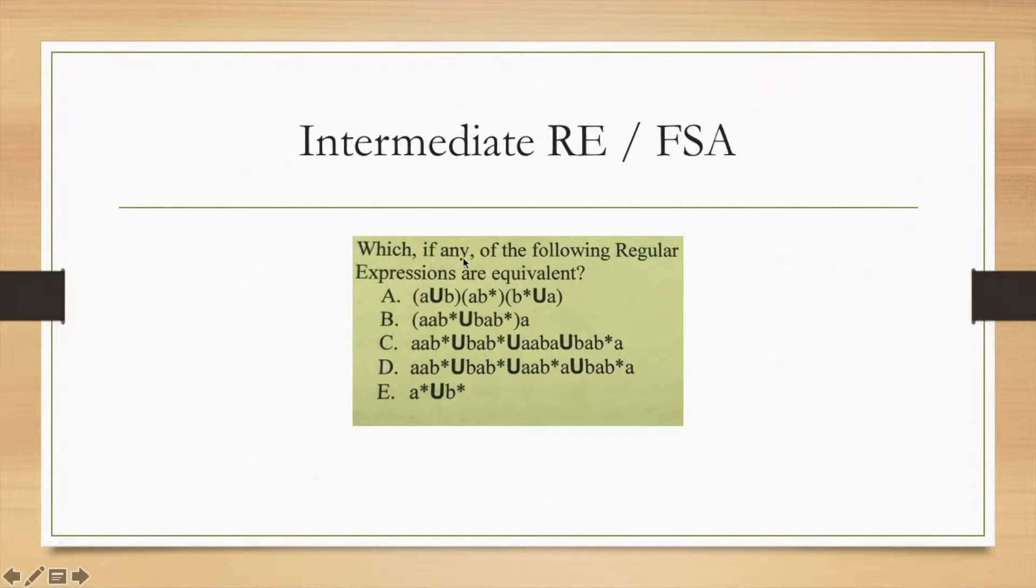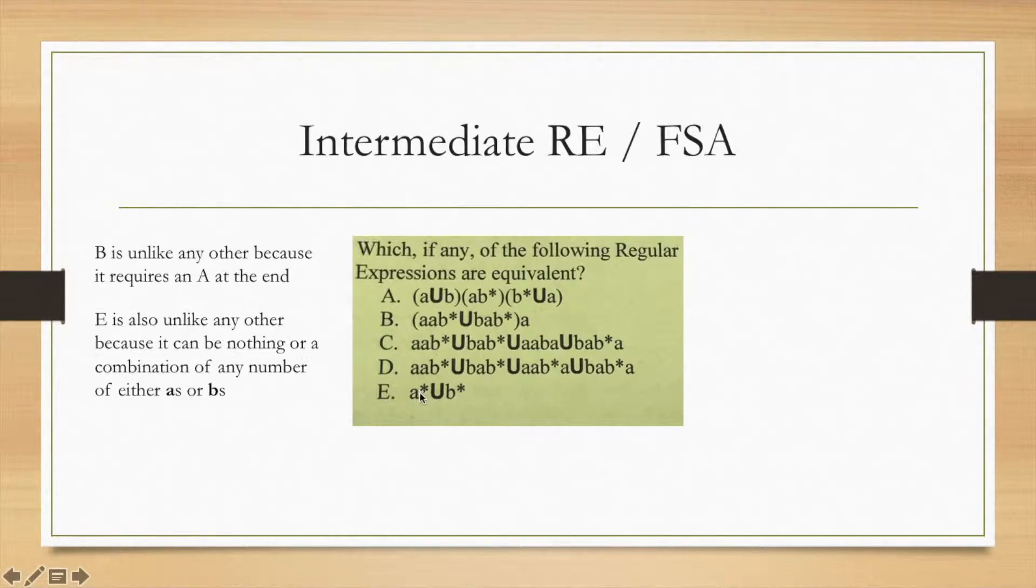Next up we've got: which, if any, of the following regular expressions are equivalent to each other? Is A equal to B, C, D, or E? Is B equal to C, D, or E, along those lines? We can cross out B because it requires an A at the end, whereas here you could end with a B star. Here there's some expression that ends with a B star, same here. Then this is a whole different case—it's also not going to be equivalent to anything because you could put in a zero or null string and it would still work. It's just any number of A's, any number of B's, or none. Now we're going to be comparing A, C, and D. C and D are going to be distinctly different from each other because, as you can see in this third potential thing that's a union, one allows any number of B's and the other only allows or requires it.